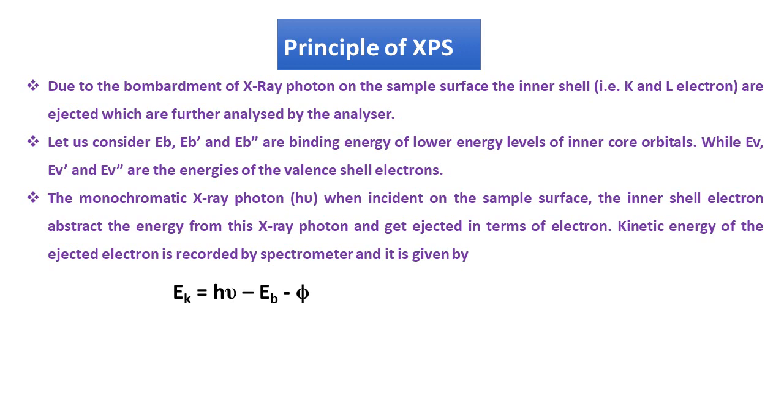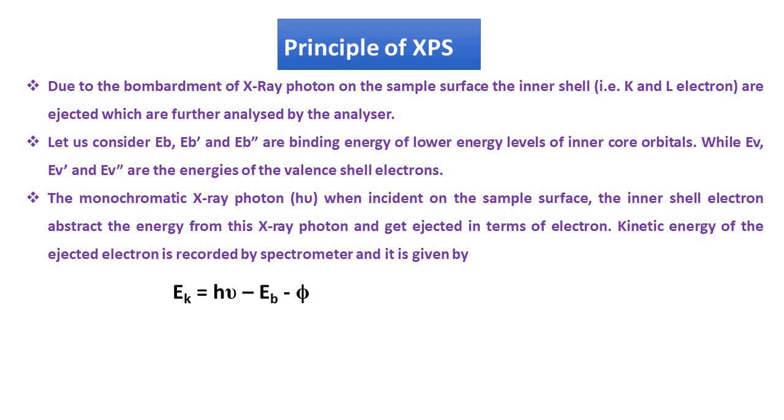Kinetic energy is equal to h nu minus binding energy minus phi. From this equation, it is clear that monochromatic source is required for the instrument. In XPS, two electrons are required. Therefore, XPS is not useful for the determination of hydrogen and helium.